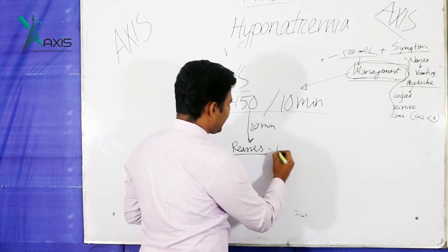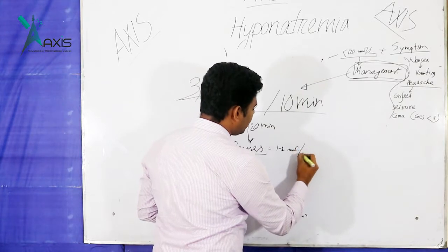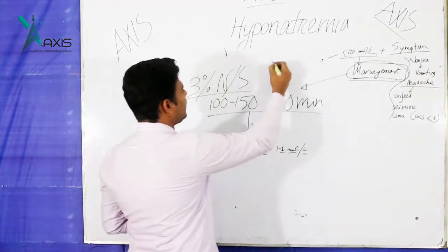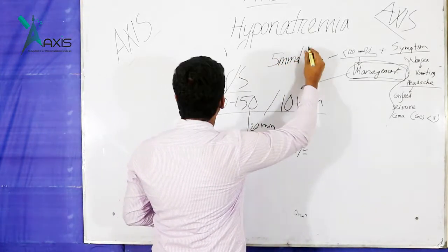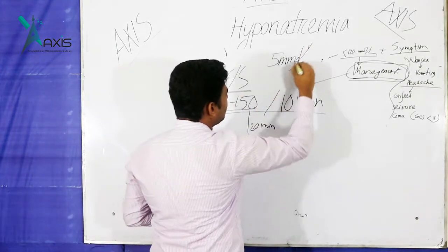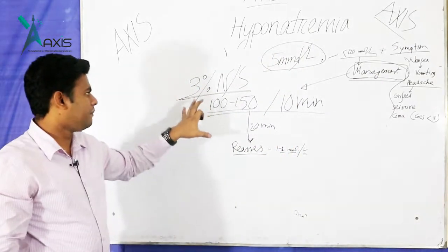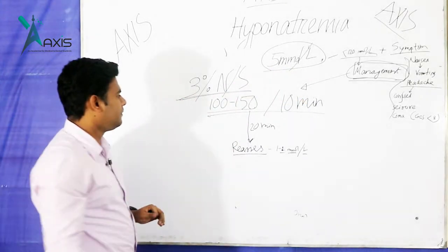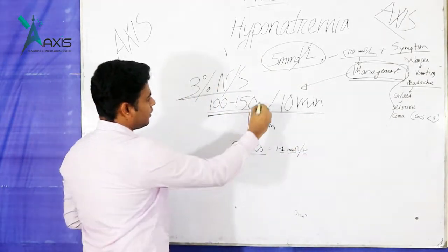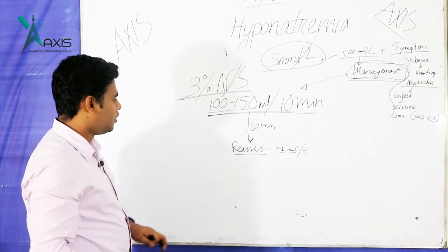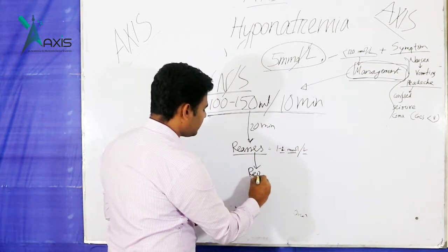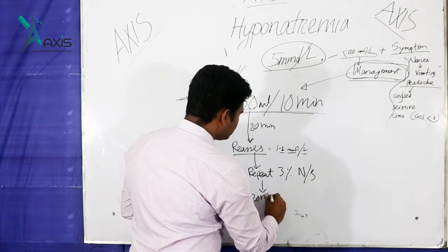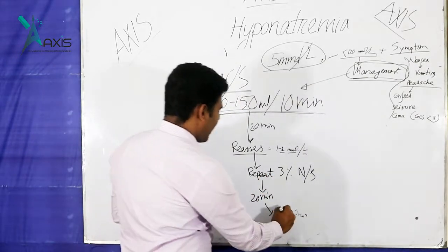Check the sodium level after administration. You are watching for a sodium level rise of 1 to 2 mmol. Reassess after 10 minutes. If sodium has not risen by at least 5 mmol per litre and symptoms persist, repeat the 100 ml of 3% normal saline. Reassess again — if 5 mmol per litre rise has been achieved, stop the hypertonic saline.